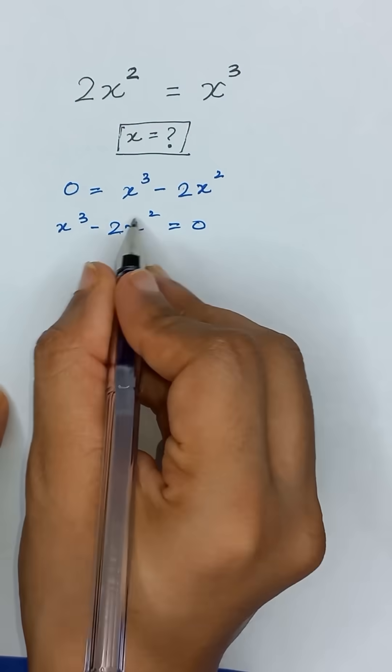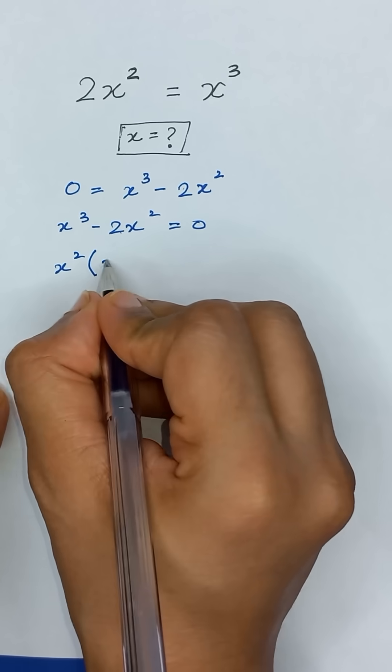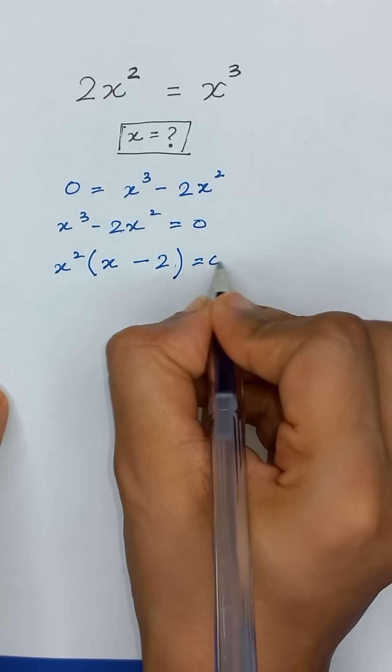From these two terms, x² is common. So x³ divided by x² will be x, and 2x² divided by x² will be 2, and it is equal to 0.